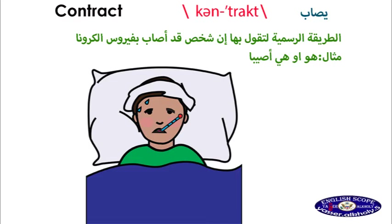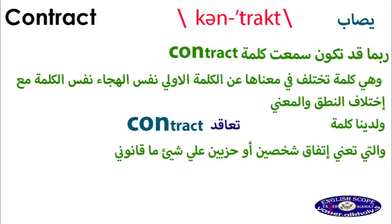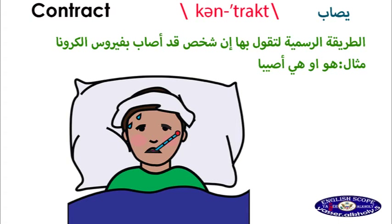Contract is the formal way to say that someone has the coronavirus — he or she has contracted it. Important note: you might hear the word 'contract' with stress on the first syllable — CONtract — not conTRACT. Same word, same spelling, but different pronunciation. CONtract means an agreement between two or more persons or parties, especially legally. ConTRACT means to become affected with.